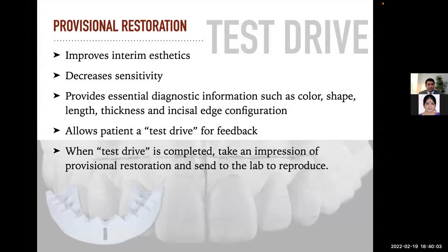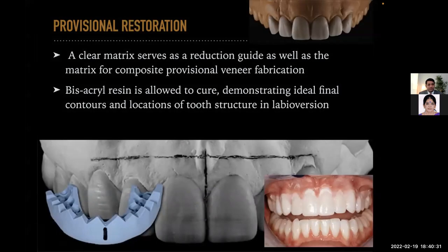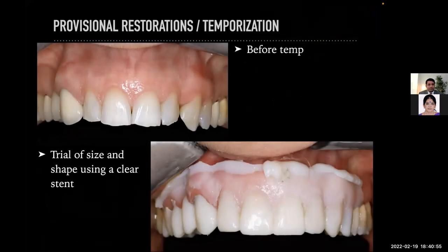For provisional restorations — the taste drive — this improves interim aesthetics, decreases sensitivity, and provides essential diagnostic information such as color, shape, length, thickness, and incisal edge configuration, allowing the patient a test drive for feedback. When the test drive is completed, take an impression of the provisional restoration and send it to the lab to reproduce. The provisional restoration uses a clear polyvinyl siloxane matrix produced from a modified wax-up. A clear matrix serves as a reduction guide as well as the matrix for composite provisional veneer fabrication. Bisacryl resin is allowed to cure, demonstrating the ideal final contours and location of the tooth structure.